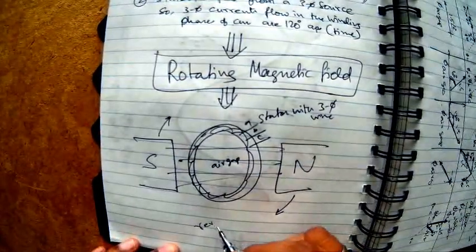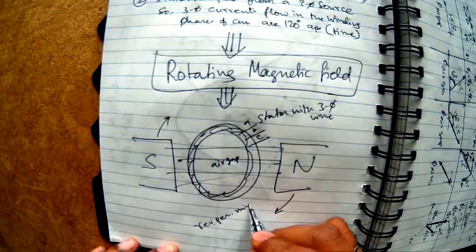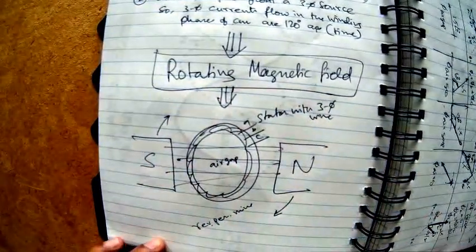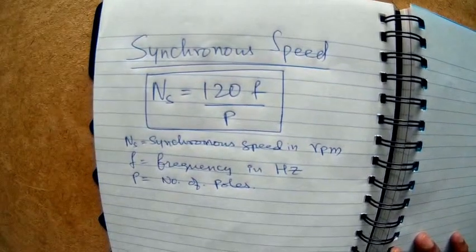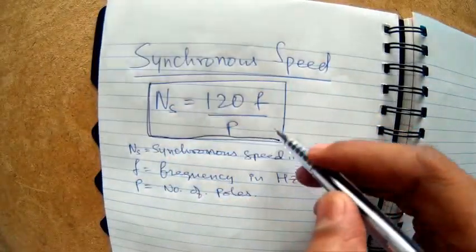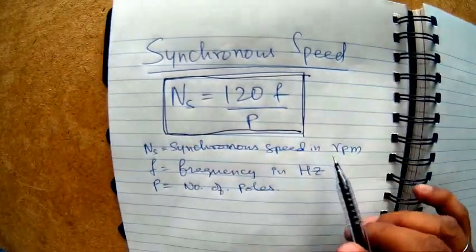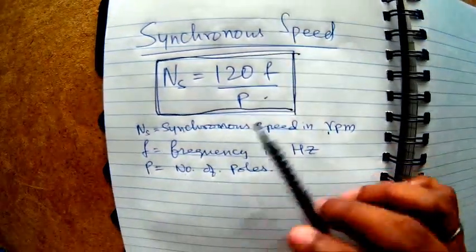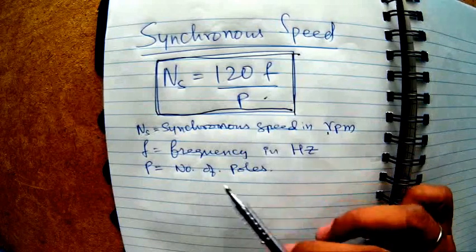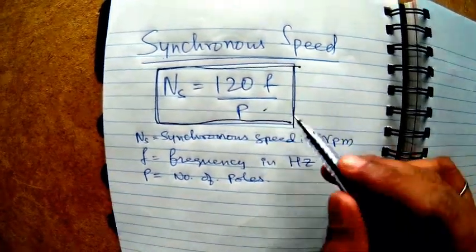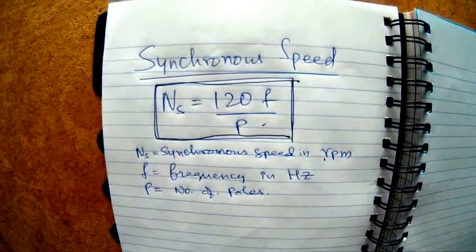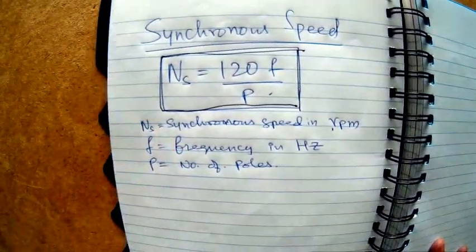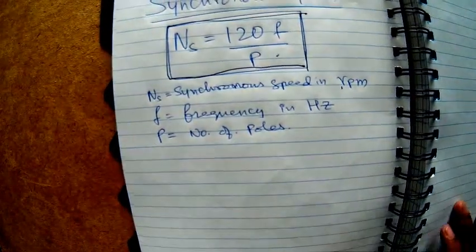Now what is the speed of this rotation? The unit that we measure speed in rotation is revolutions per minute. In one minute, how many revolutions are these poles making? The answer is a quite famous equation which is NS = 120f/P, where NS is the synchronous speed in revolutions per minute, 120 is a constant, f is the frequency in Hertz of the three-phase supply, and P is the number of poles, which is determined by the type of winding. Let's quickly derive how this formula comes into picture.